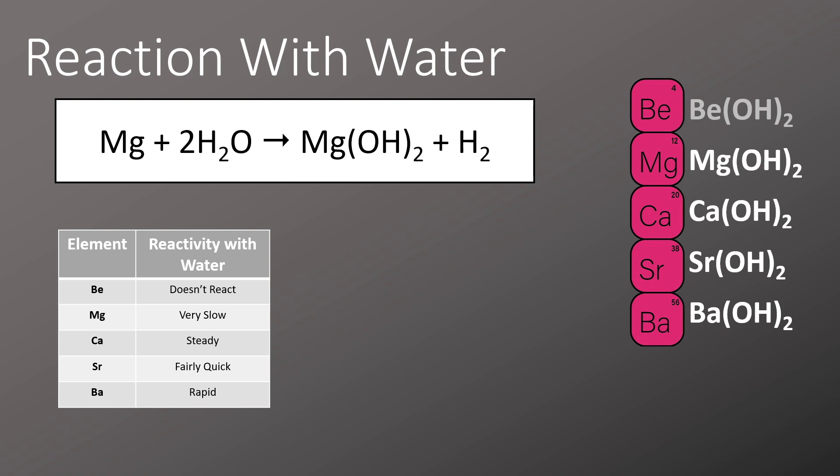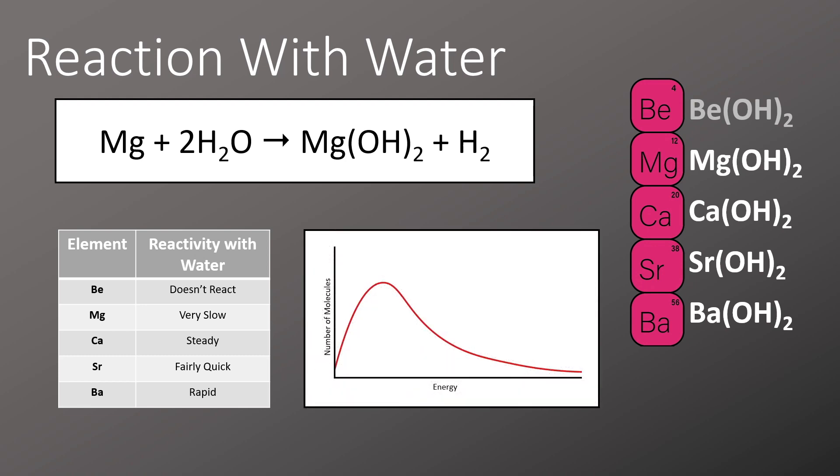Magnesium is a slow reaction, calcium is steady, strontium speeds up fairly quick, and barium is a rapid reaction. This can all be linked back to ionization energies. The higher the ionization energy, the less likely or the slower the reaction is to take place.